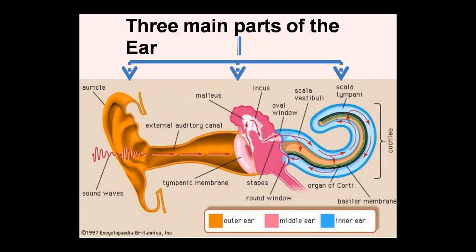The role of the outer and middle ear is to transmit sound to the inner ear. The outer and middle ear also compensate for sound energy loss that naturally occurs when sound waves pass from air into water, by amplifying the sound energy during the process of sound transmission.